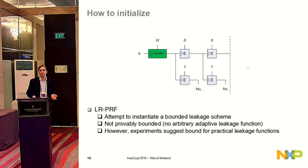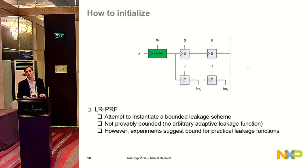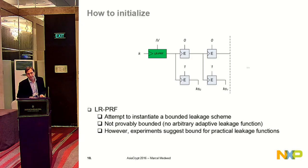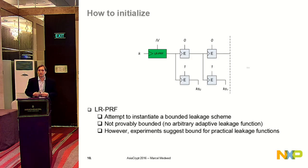We have no proof for this construction because, for instance, if you have an adaptive leakage function you cannot really show something for hardware. But if we fix some assumptions like Hamming weight leakage, we can at least conduct experiments which suggest very positive results on the bounded leakage side.